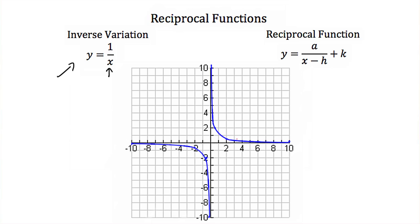Here we're given the graph of y is equal to 1 over x, and notice that this graph has asymptotes at x is equal to 0 and y is equal to 0. These asymptotes are lines on the graph that the graph can never touch or cross. These asymptotes come from the fact that if x was equal to 0 in this equation, we would be dividing by 0, which would make this function undefined. So x can never equal 0 in this function, and that's where we get this vertical asymptote.